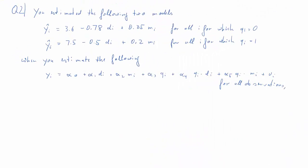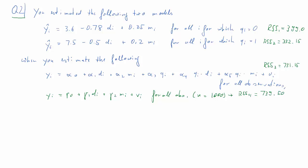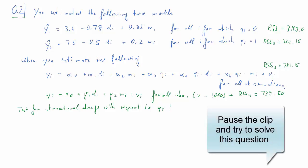Let's try this on another problem using the same material from question 1. We have three estimated models with residual sums of squares of 399, 332.15, and 731.15 respectively. We also estimate a fourth model: y_i as a function of a constant, d_i, and m_i for all observations, giving 1,000 total observations and RSS equal to 739.50. The task is to test for structural change with respect to q_i. Pause and try to solve this.